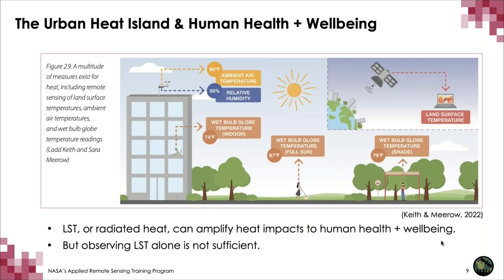Heat stress is much more complex than just land surface temperature alone. You have the differences between indoor and outdoor air temperature, the influences of wind speed, relative humidity, whether you're in shade, and many other climatological factors. This can be difficult to measure with a satellite alone if you're just looking at land surface temperature.